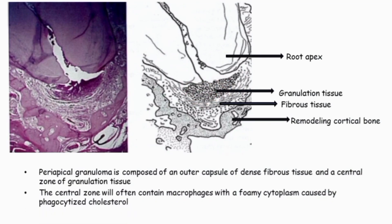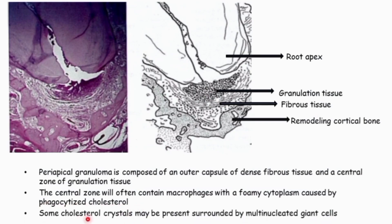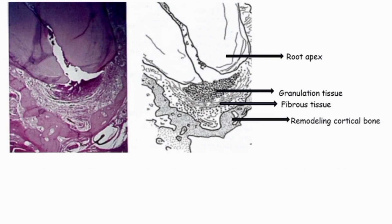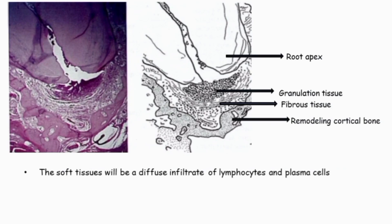There are many components present inside the central zone of granulation tissue. The first one is macrophage. The macrophage present inside the central zone will be having a foamy cytoplasm, and that is because of the phagocytized cholesterol. In addition to these cholesterol crystals, we can also see multi-nucleated giant cells.